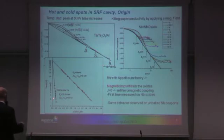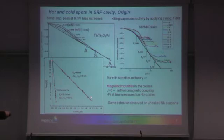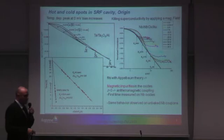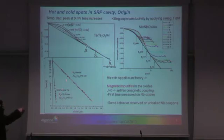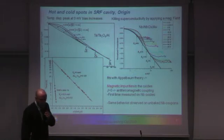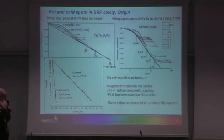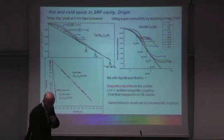There are two fitting parameters from these lines — a temperature and a coupling constant. What we found is that the temperature is roughly the same for niobium and tantalum, but the coupling constant is 10 times higher. This is a clue that something different is happening with niobium compared to tantalum oxide — specifically regarding magnetic impurities inside the tunnel barrier.